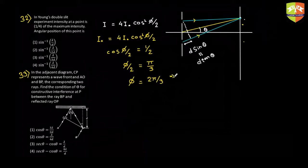If phase difference is two pi by three, what will be the path difference? Path difference should be equal to lambda by two pi into phase difference. That's how you convert between phase difference and path difference. So this will be equal to lambda by three.